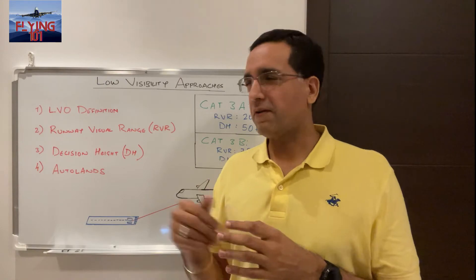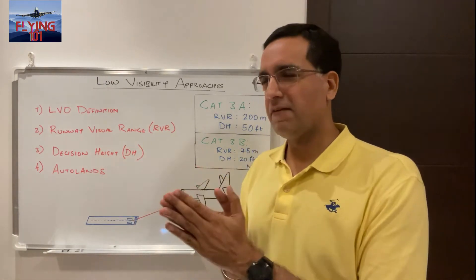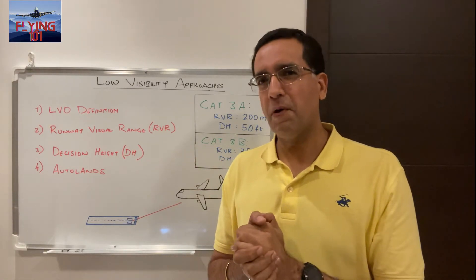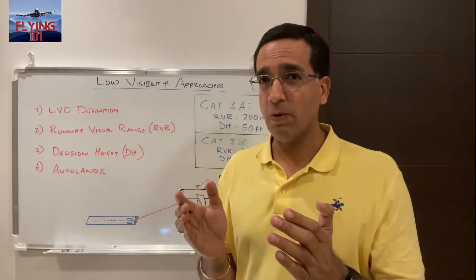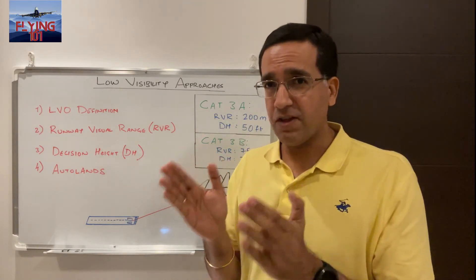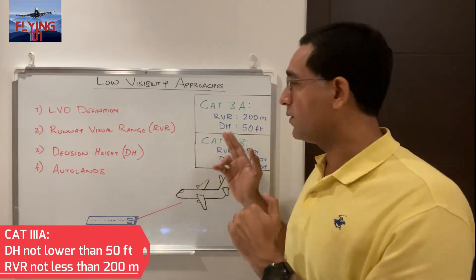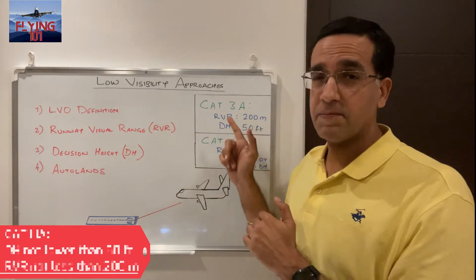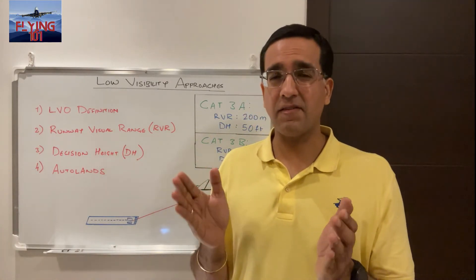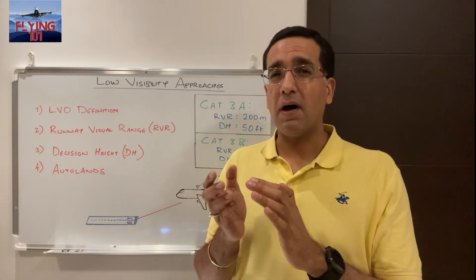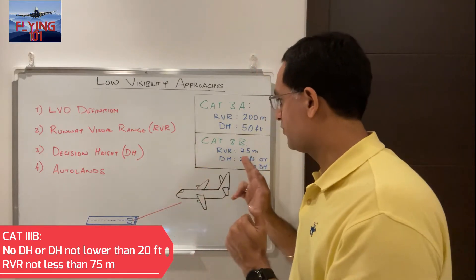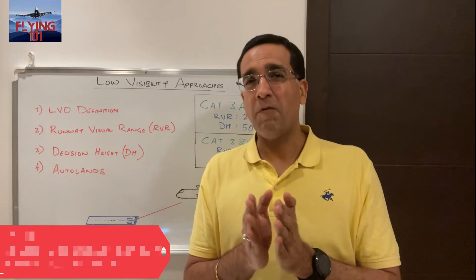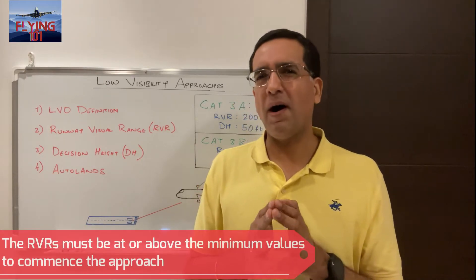Now let's see how this applies to Category 3 Alpha and 3 Bravo approaches. In the case of a Category 3 Alpha approach, we are talking about a precision instrument approach and landing with a decision height lower than 100 feet but not less than 50 feet, and a runway visual range not less than 200 meters. For the Category 3 Bravo approach, this is a precision instrument approach and landing with either no decision height or a decision height down to 20 feet, and an RVR of not less than 75 meters.